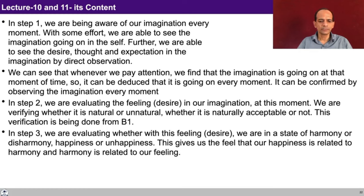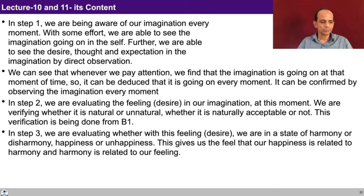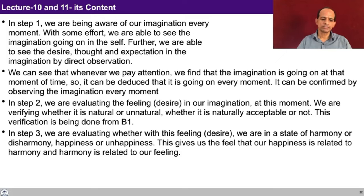In step two, we are evaluating the feeling and the desire in our imagination at this moment. We are verifying whether it is natural or unnatural, whether it is naturally acceptable or not. And this verification is being done from block B1 — the block of knowing. In step three, we are evaluating whether this feeling — that is desire — are we in a state of harmony or disharmony, happiness or unhappiness. This gives us the feel that our happiness is related to harmony and harmony is related to our feeling. In step three, we are able to see whether you are comfortable or not, whether you are in harmony or disharmony, happy or unhappy, and then you can get a feel that your happiness is related to harmony and the harmony is related to the feeling.